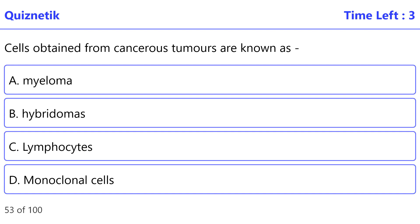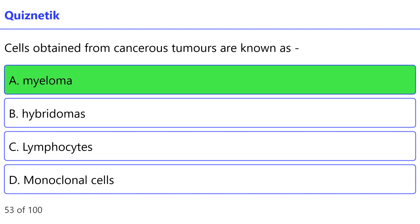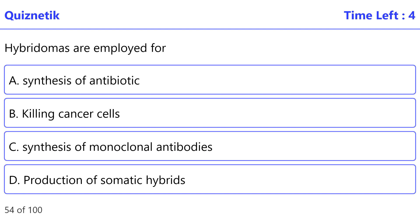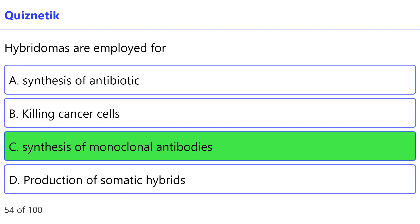Cells obtained from cancerous tumors are known as — the correct option is A — myeloma. Hybridomas are employed for — the correct option is C — synthesis of monoclonal antibodies.